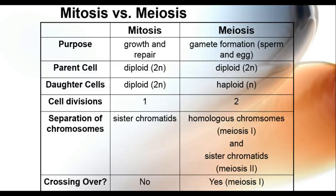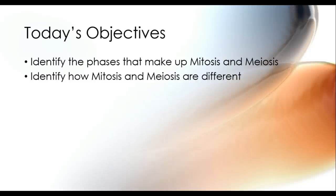Here's a comparison chart of mitosis and meiosis. The purpose of mitosis is growth and repair, while meiosis is for gamete formation — sperm and eggs. In both processes the parent cell is diploid. Mitosis ends with two identical diploid daughter cells; meiosis ends with four haploid gametes. Mitosis has one cell division; meiosis has two. Mitosis separates chromosomes into sister chromatids; meiosis 1 separates homologous chromosomes and meiosis 2 separates sister chromatids. Mitosis does not have crossing over, but meiosis does — and that's what gives us genetic variation. Hopefully you were able to identify the different phases in mitosis and meiosis, and see how they differ.